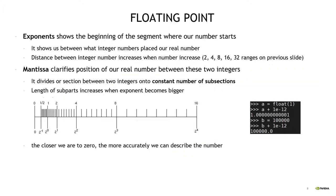The exponent shows the beginning of the segment where our number is placed — the window between which integer numbers our real number is placed. The distance between integer numbers increases when the numbers stored in the exponent increase. You can look at the distances between 2, 4, 8 and 16 on the slide. The mantissa clarifies the position of our real number between these two integers, dividing the section between 2 integers into a constant number of subparts. The length of subparts increases when the exponent becomes bigger. The closer we are to zero, the more accurately we can describe the number.